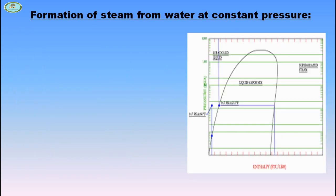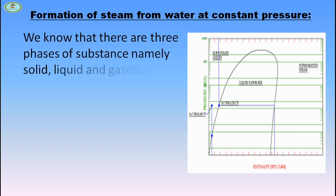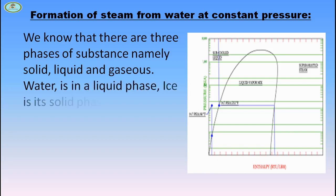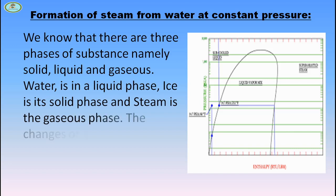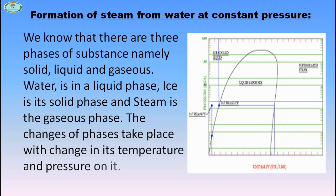We know that there are three phases of substances, namely solid, liquid, and gas. Water is in liquid phase, ice is its solid phase, and steam is the gaseous phase. The changes of phase take place with changes in temperature and pressure.